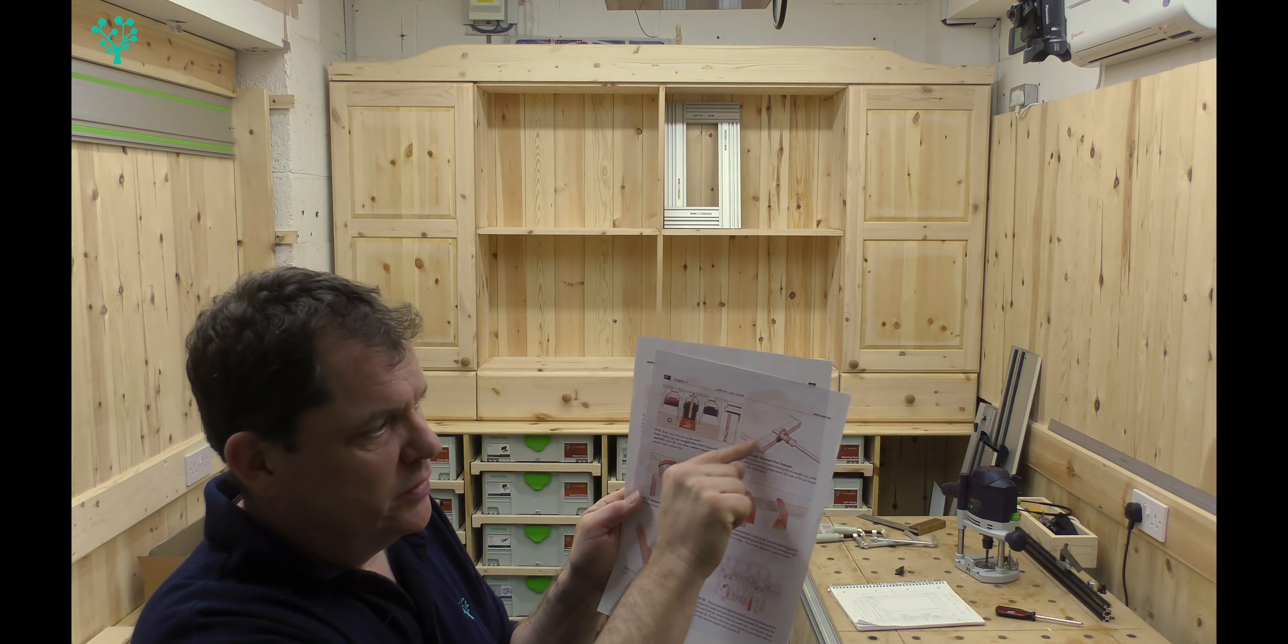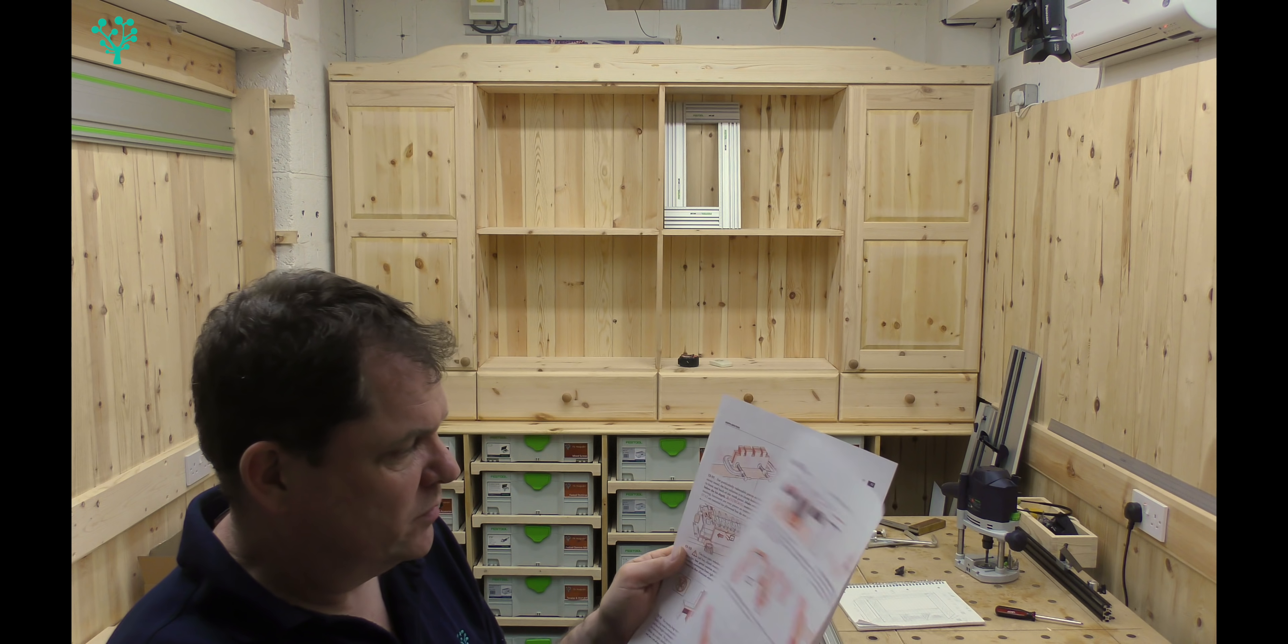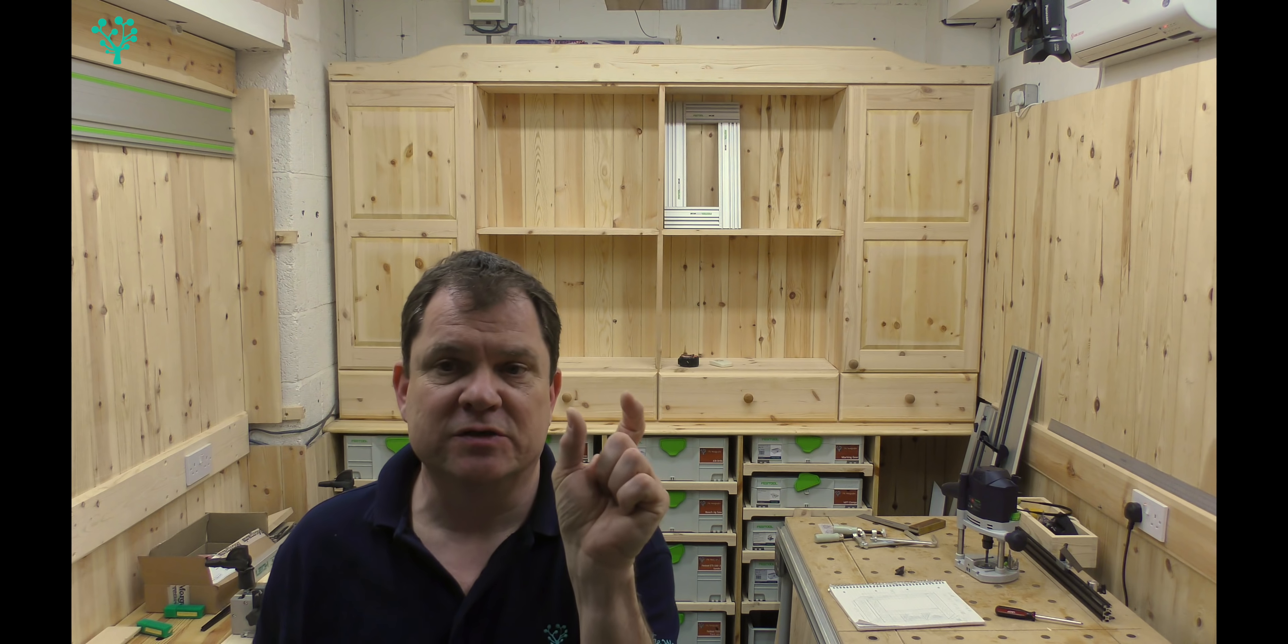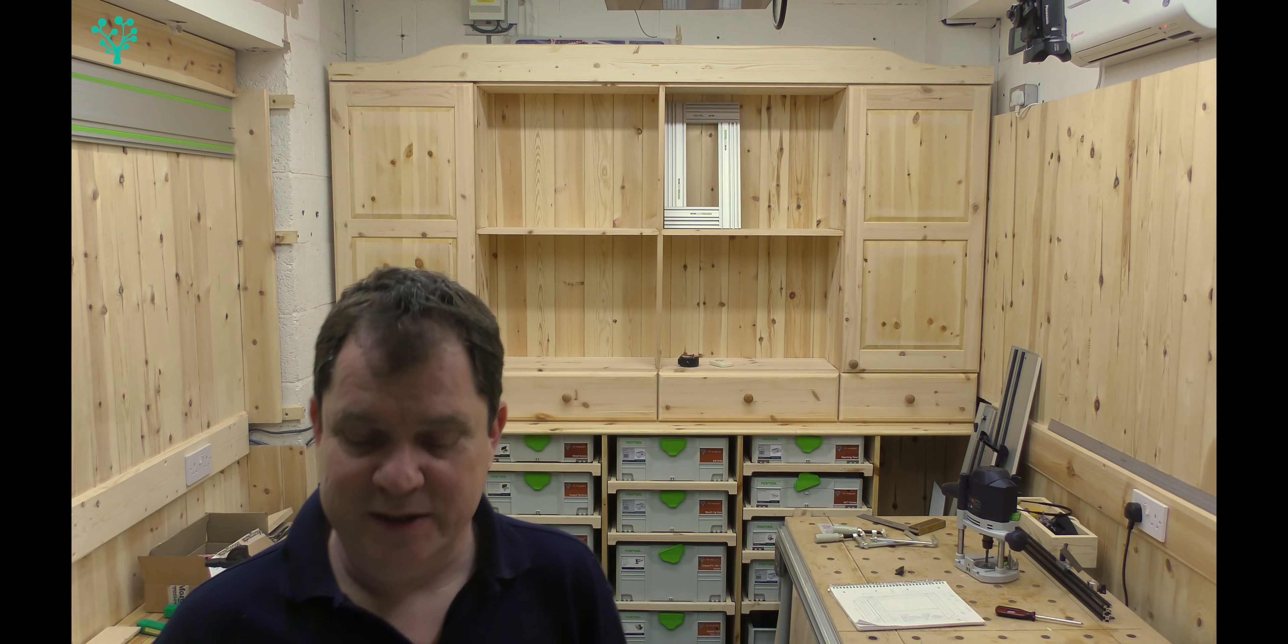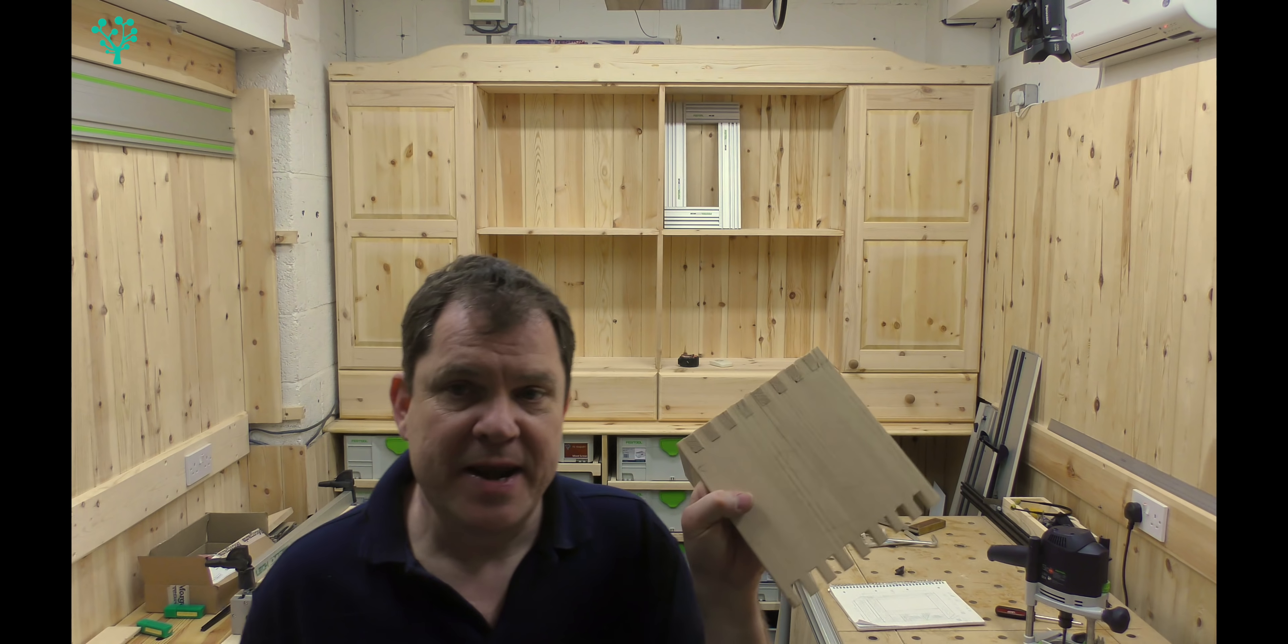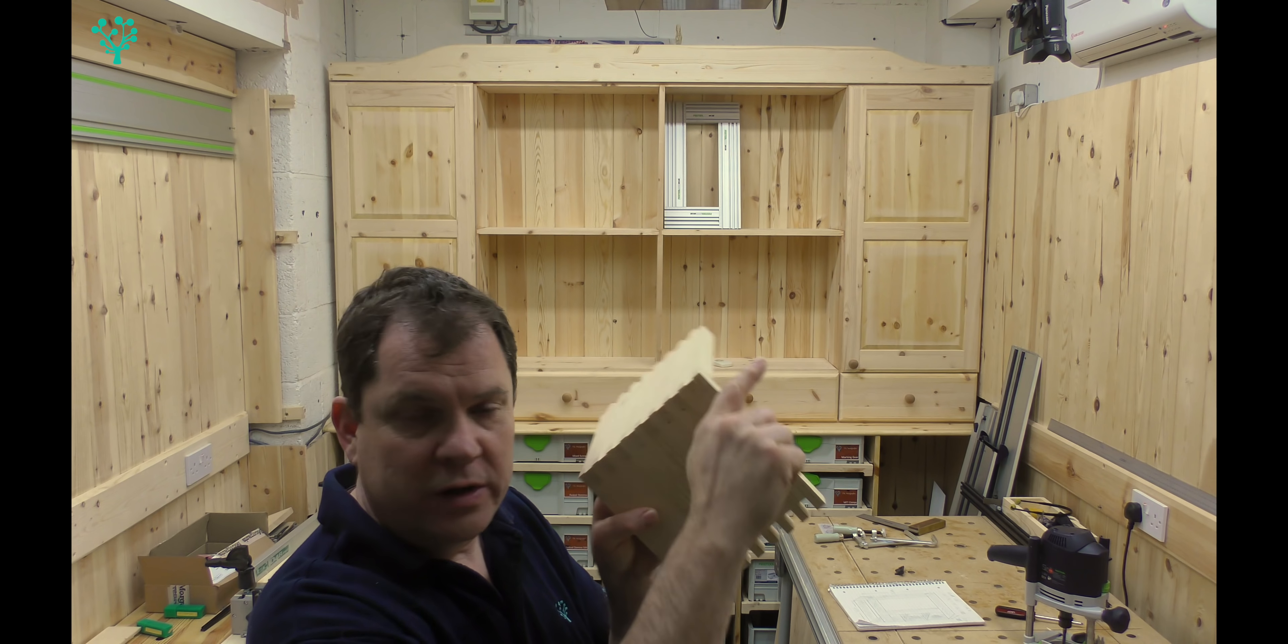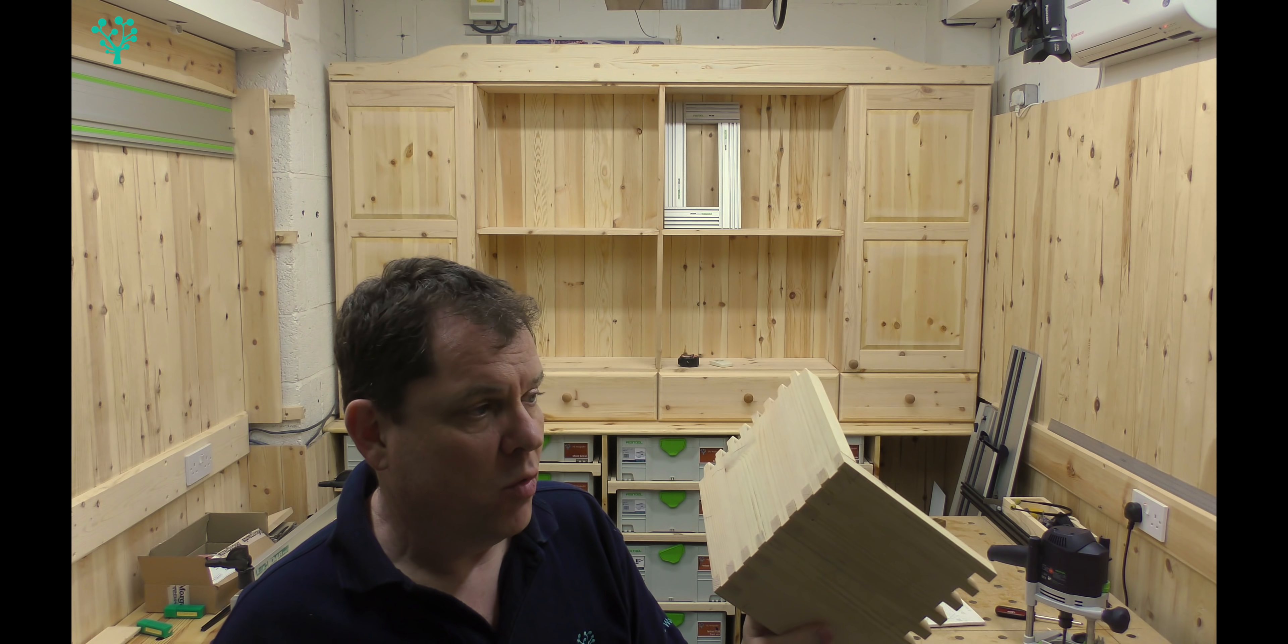It talks about using a score, so we can use a marking gauge to actually sever the fibers, and that also stops some of that tear out. More interestingly, it talks about the use of backer boards, so you're actually sandwiching the piece of wood between two other pieces of wood and then routing that out, and that eliminates tear out completely. So that's it for today. In the next episode, we're going to look at some of those recommended coping techniques to see if we can improve the quality of this joint before we go ahead with the final piece of work.